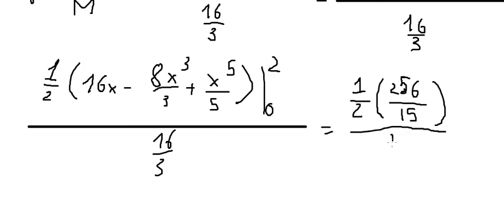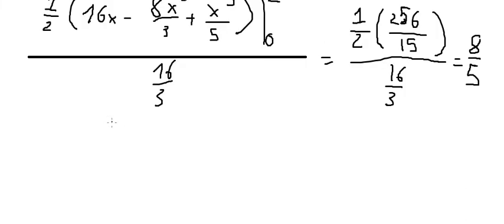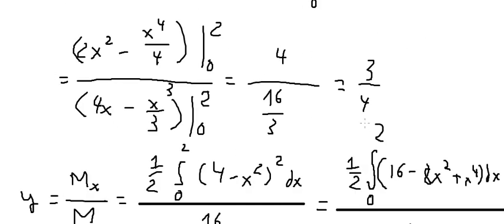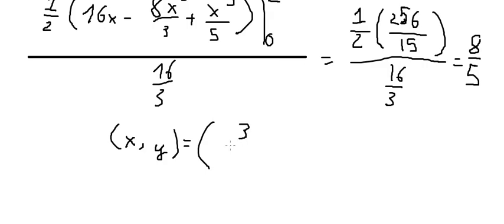Dividing 256 over 15 by 16 over 3, we get the final answer: y-bar equals 8 over 5. So the center of mass is at the point (3/4, 8/5). This is the end — thank you for watching.